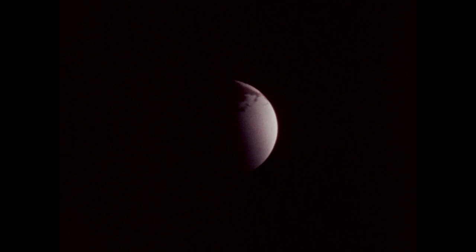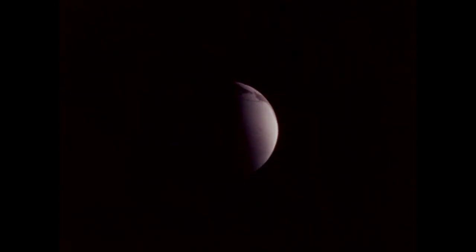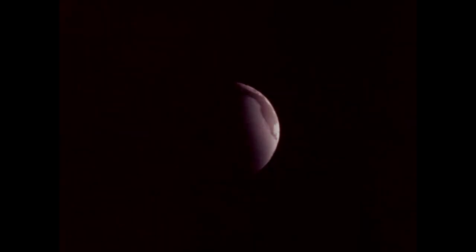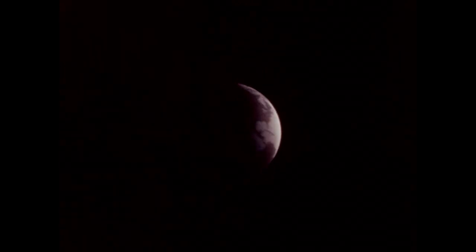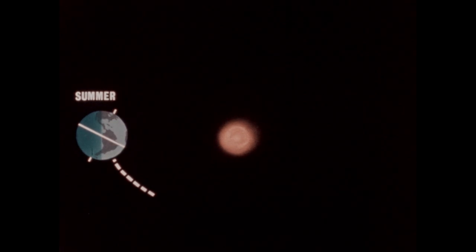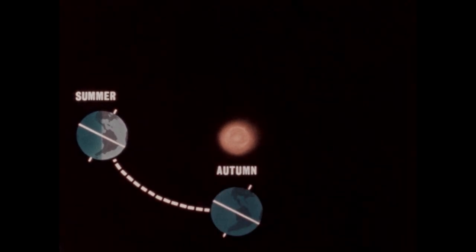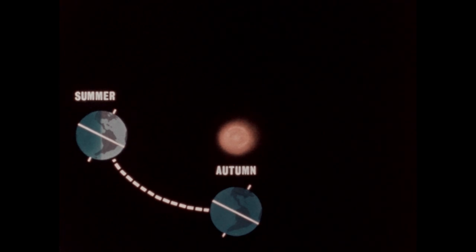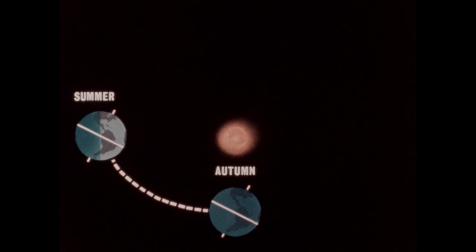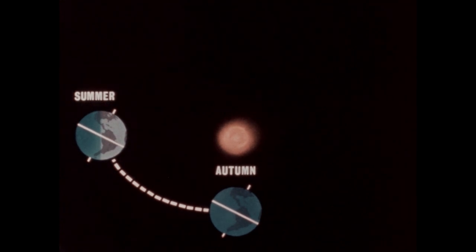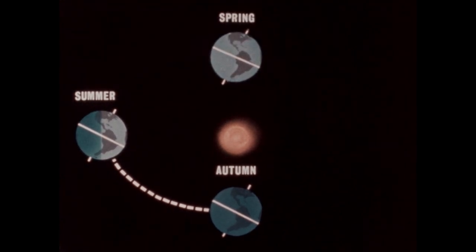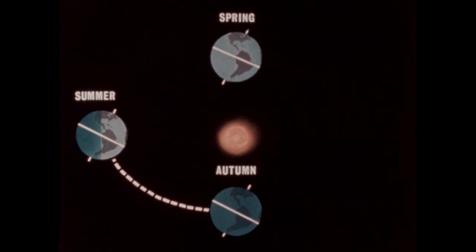After the summer solstice, as the Earth continues in its orbit, the northern end of the axis gradually begins to be tipped away from the sun again. On the first day of autumn, about September 22nd, neither end of the Earth's tilted axis is tipped toward the sun. And on the first day of autumn, just as on the first day of spring, there are 12 hours of daylight and 12 hours of night — exactly equal. This is the day of the autumnal equinox.